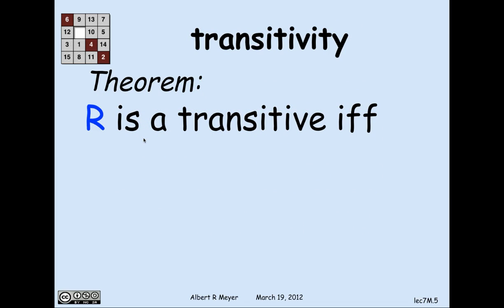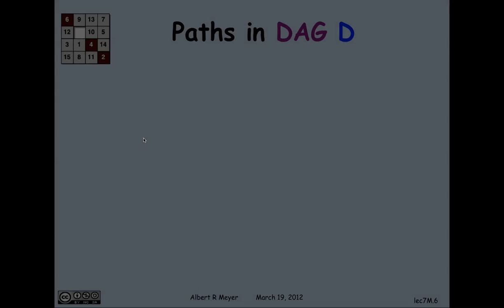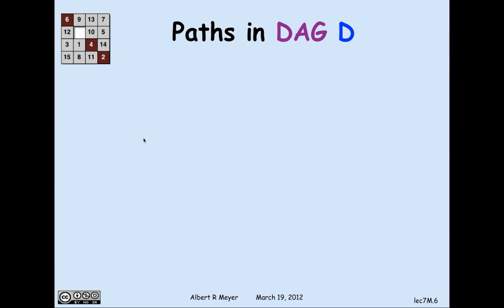The basic theorem we have is: what is transitivity capturing as a property of a relation? A relation r is transitive if and only if r is equal to the positive walk relation for some digraph g. The proof is essentially trivial because you can let the relation r be the digraph that it is the positive path relation of.